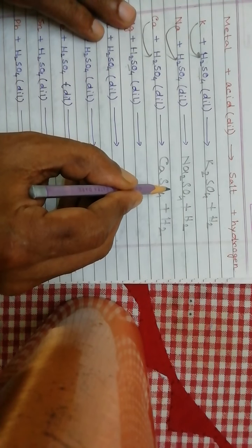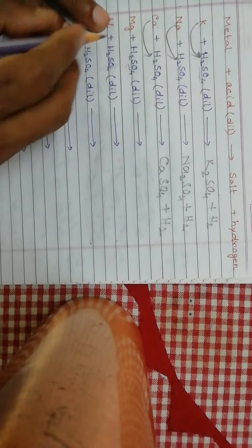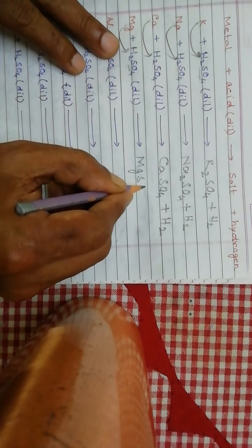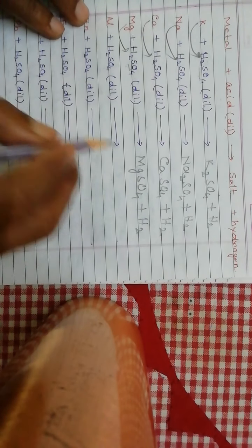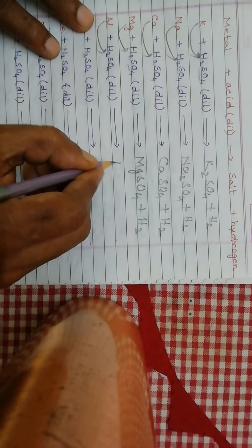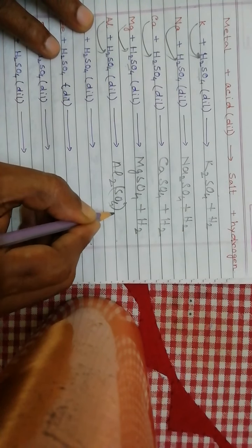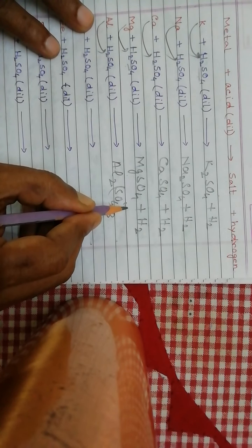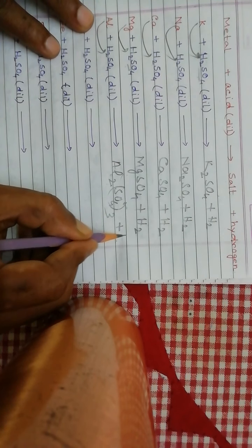In the case of calcium sulfate, the valency of calcium is 2 and the valency of sulfate is 2, so the 2s cancel and it becomes CaSO₄. Similarly, magnesium reacts with sulfuric acid to form magnesium sulfate plus hydrogen — valency of magnesium is 2 and sulfate is 2. When aluminium reacts with H₂SO₄, using the cross method with valency 3 for aluminium and 2 for sulfate, it forms Al₂(SO₄)₃ plus hydrogen.